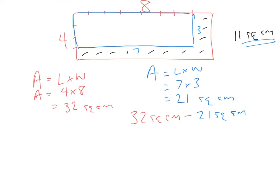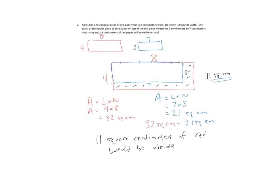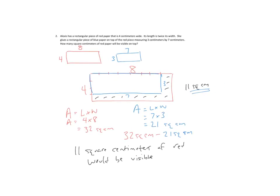So, I think we would write as our final stage, eleven square centimeters of red would be visible. Again, I apologize for my handwriting with this stylus. I've got to find a better stylus. But that looks to me like that would summarize our answer. That eleven square centimeters would be visible on top, once we've put the blue rectangle over the red rectangle.